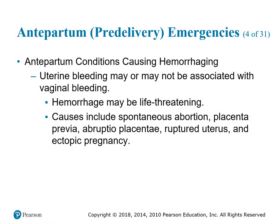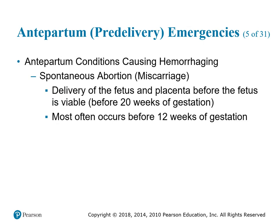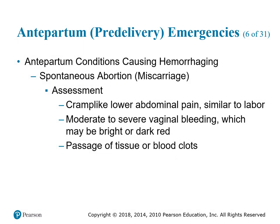Antepartum conditions causing hemorrhage: uterine bleeding may or may not be associated with vaginal bleeding. Hemorrhage may be life-threatening. Causes include spontaneous abortion, placenta previa, abrupto placenta, ruptured uterus, and ectopic pregnancy. In spontaneous abortion, delivery of the fetus and placenta occurs before the fetus is viable — before 20 weeks of gestation, most often before the 12th week. The patient presents with cramp-like lower abdominal pain, moderate to severe vaginal bleeding which may be bright or dark red, and passage of tissue or clots.